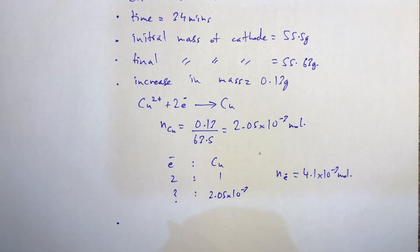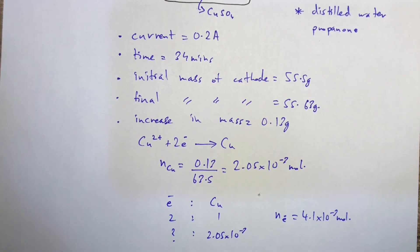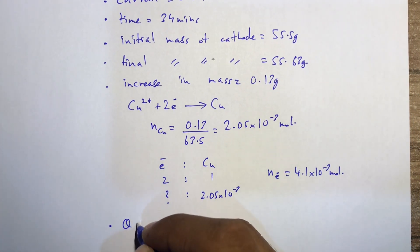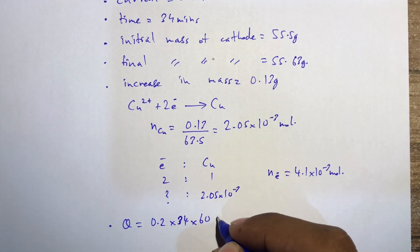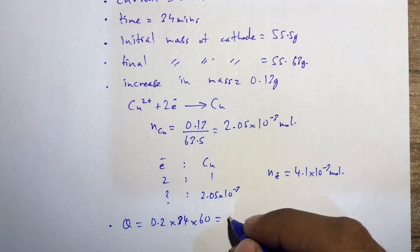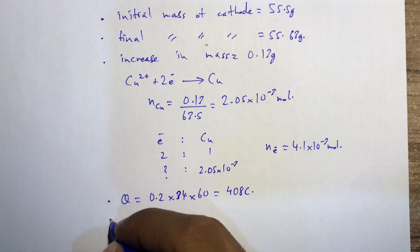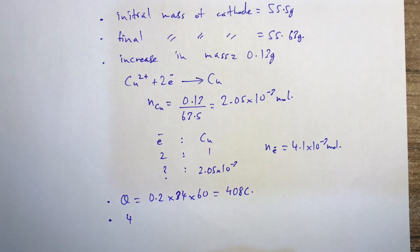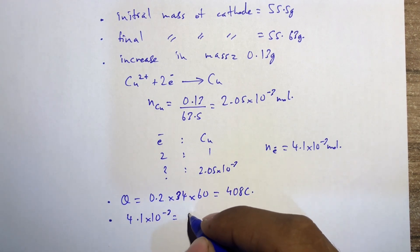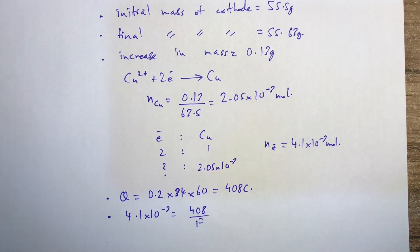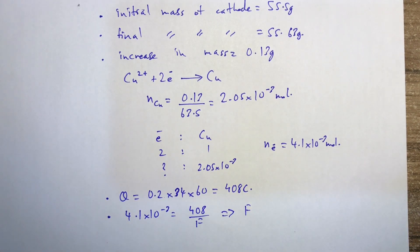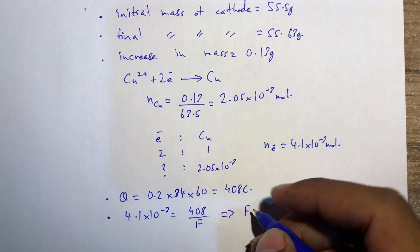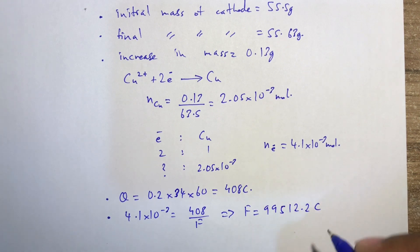Using the time and current, we find the charge: Q = It = 0.2 × (34 × 60) = 408 coulombs. Using n = Q/F, the experimental value of Faraday's constant = Q / n(e⁻) = 408 / (4.1 × 10⁻³) = 99,512.2 coulombs. There is some experimental error which is why the value differs slightly from 96,500.